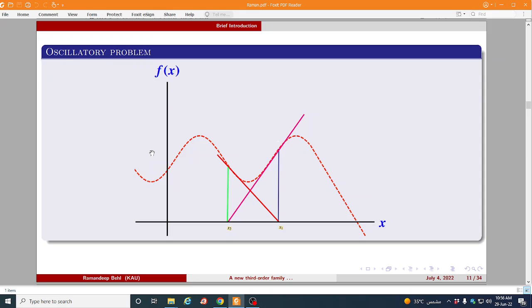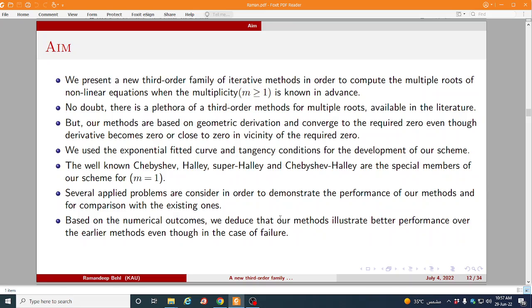Next is oscillatory problem. So as you can see that here we choose here x1 and then we reach it here by tangent line, then again x2 again back it here, so here we stuck in this box so we cannot get the route.